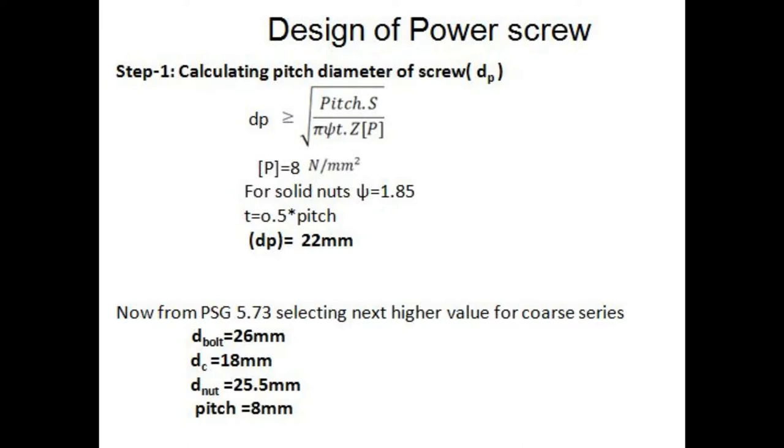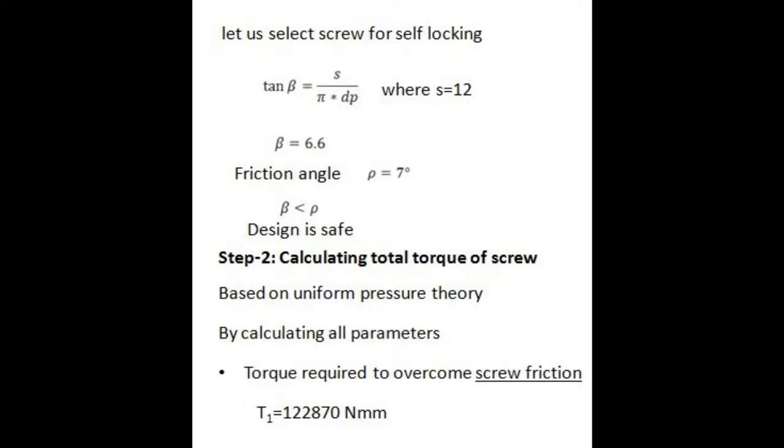Let us select screw for self locking. Tan beta equals s divided by pi times pitch diameter, where s equals 12 and beta equals 6.6 degrees. Where beta is helix angle. Friction angle rho equals 7 degrees. Here our helix angle beta is less than friction angle, so our design is safe.